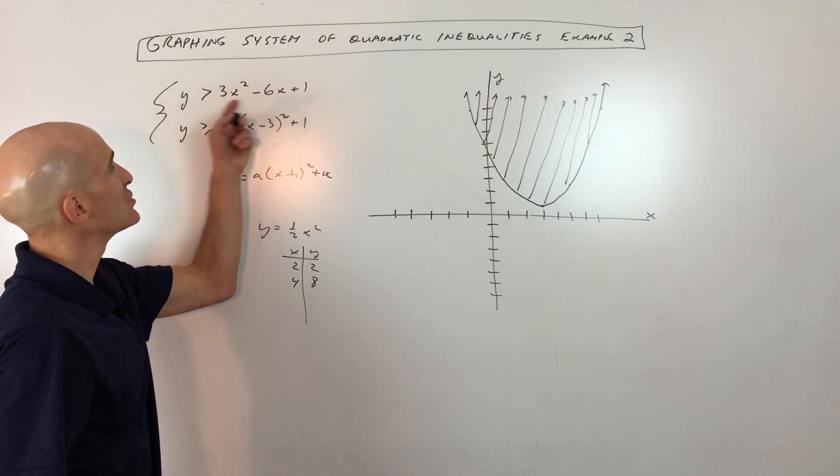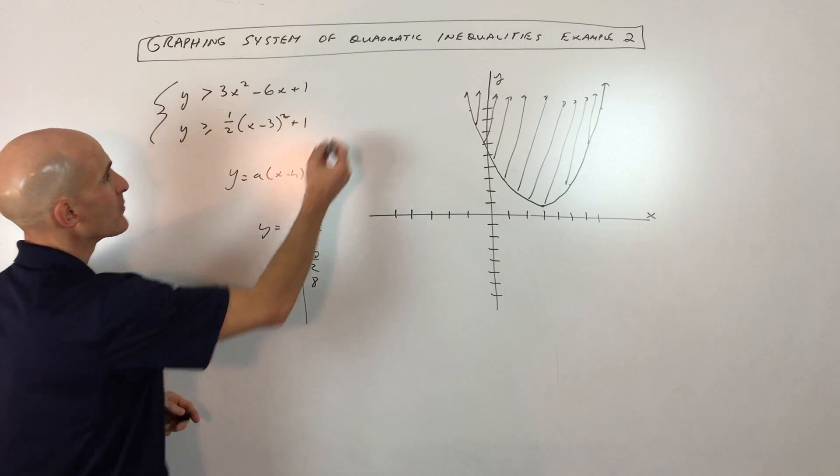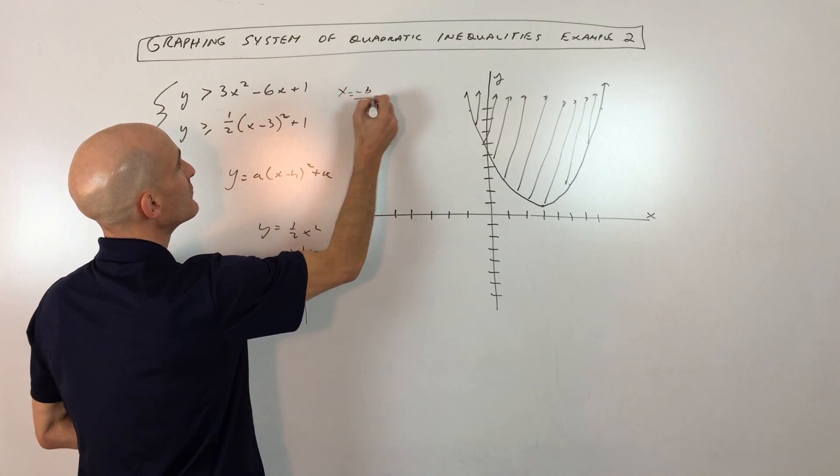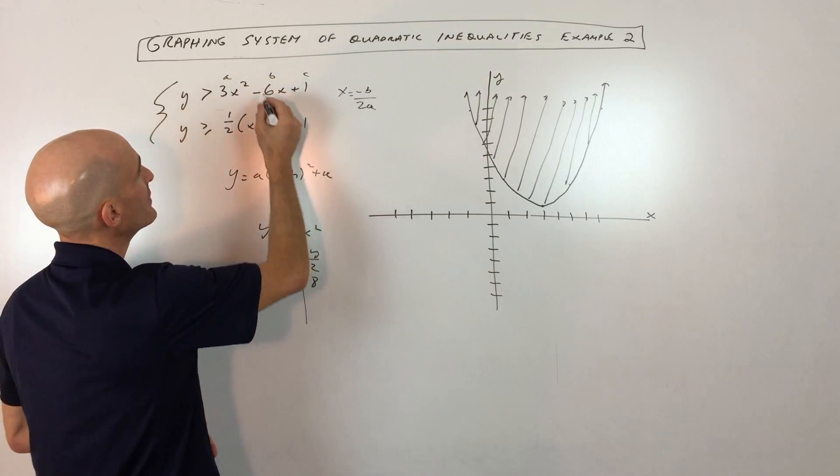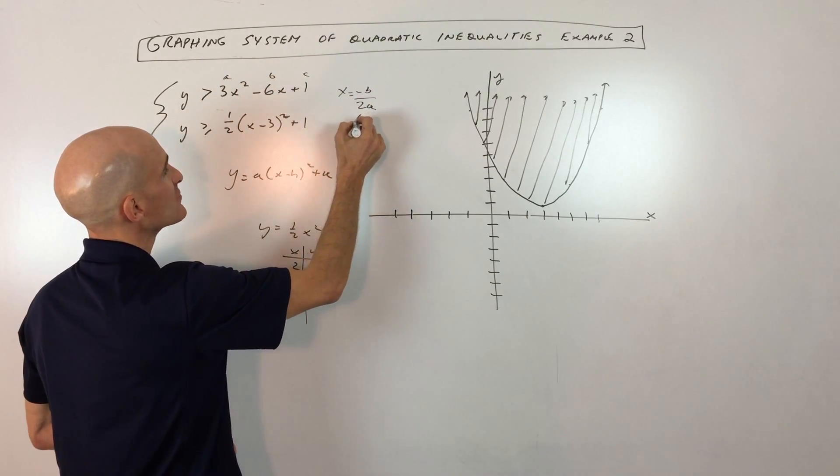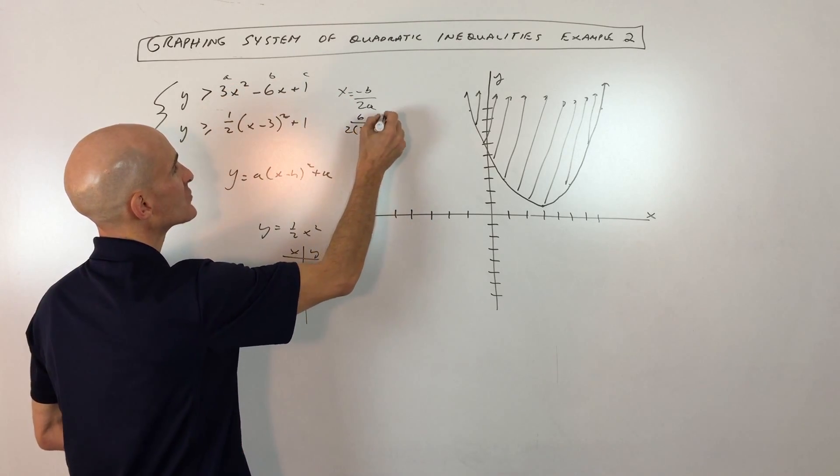Now the second one, this one's in the general form, and you can see to find the vertex here, you're going to use that formula, x equals negative b over 2a. So this is our a value, this is our b value, this is our c value. So negative b would be the opposite of 6, which is positive 6, over 2 times 3, which is also 6. So that comes out to 1.